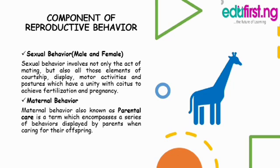Components of reproductive behavior: Number one, sexual behavior, which involves a male and a female. Sexual behavior involves not only the act of mating but also those elements of courtship display, motor activities, and postures which have a unity with coitus to achieve fertilization and pregnancy. Maternal behavior, also known as parental care, is a term which encompasses a series of behaviors displayed by parents when caring for their offspring.